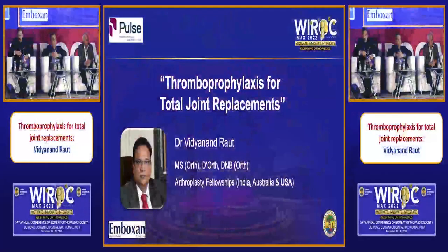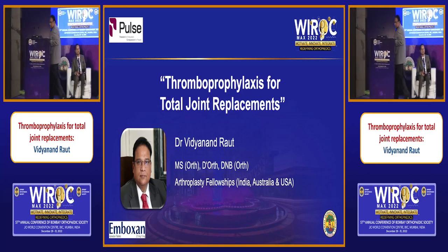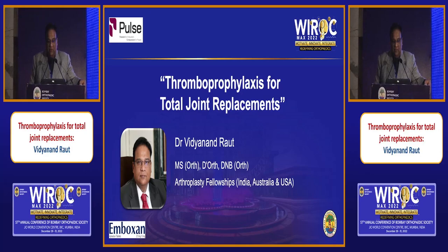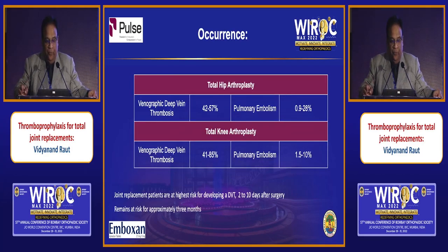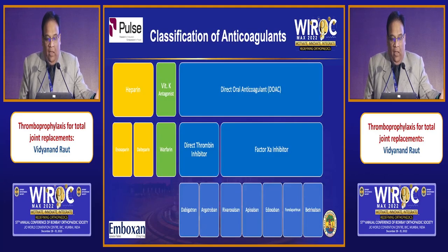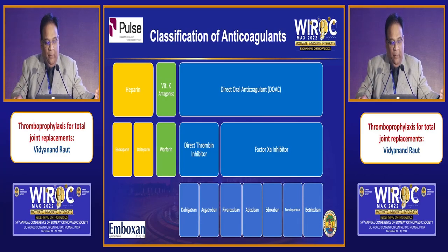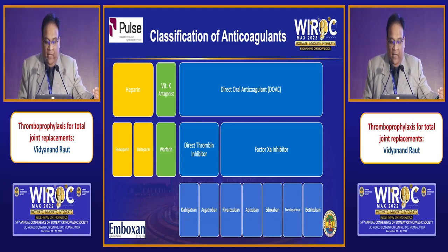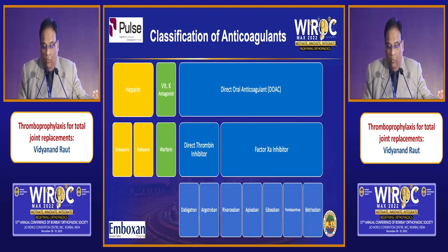The last part of this session is a trade partner supported academic activity. I call upon Dr. Vidyanand Raut for his talk on thrombo-prophylaxis for total joint replacement. Deep vein thrombosis or venous thromboembolism is a very dreaded complication, and without prophylaxis the incidence is quite high in both THR and TKR — almost 50 to 60 percent — making it mandatory to use some form of prophylaxis.